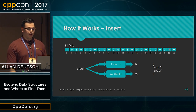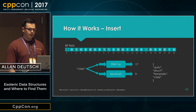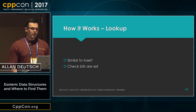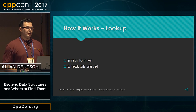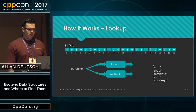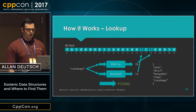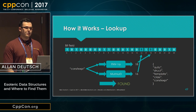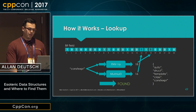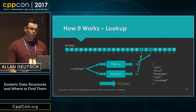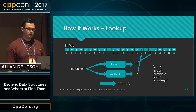Let's add a couple more elements — we can put in 'struct', 'template', 'class', and 'constexpr'. The way that lookups work is similar to insert: you also take the element and run it through the hash functions, but rather than setting bits, you check that the bits are set. If we want to look up 'constexpr', which is one that's in there, we get our bits, check them, and both of them were set to one — so they're found. That means it's probably in the bloom filter, probably inserted at some time, but we're not 100% sure. In this case, it happens to be true.